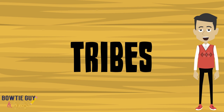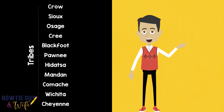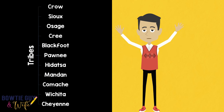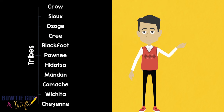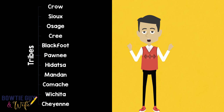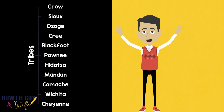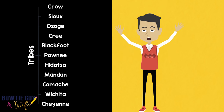What kinds of American Indians lived in the Plains? Well, there were many different tribes that lived throughout the Great Plains: the Crow, the Sioux, the Asagi, the Cree, Blackfoot, Pawnee, Edatza, Mandan, Comanche, Wichita, Cheyenne, and many others.